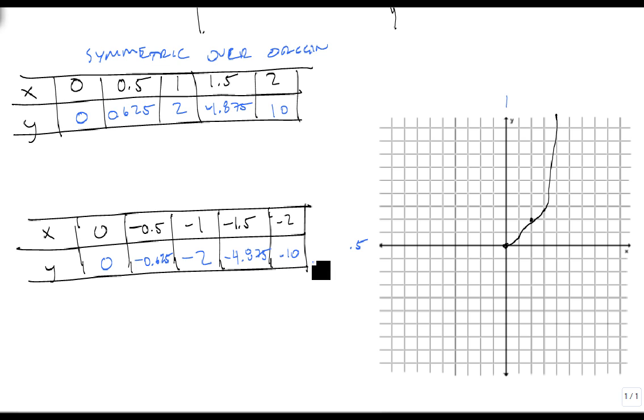And I can do the same thing for my negatives. Negative 0.5, negative 0.625, minus 1, negative 2, a little bit less than negative 5, and negative 10, and I get a graph that looks a lot more like that.